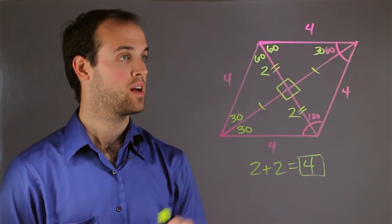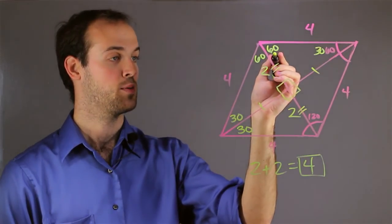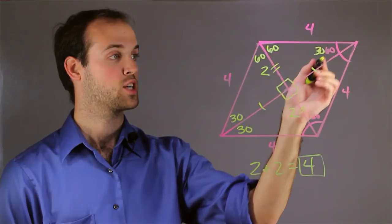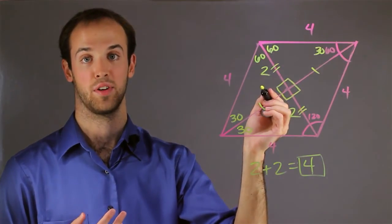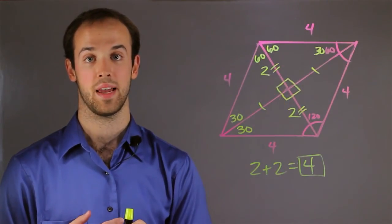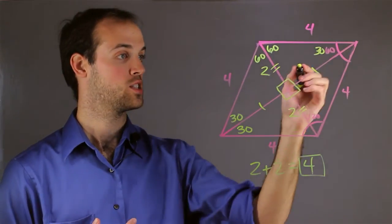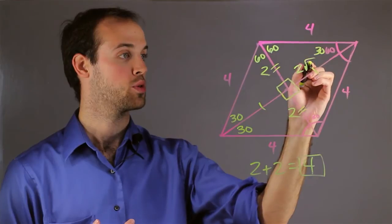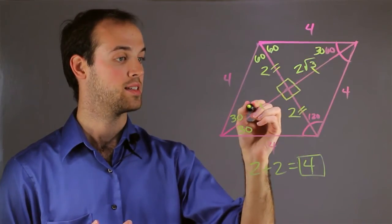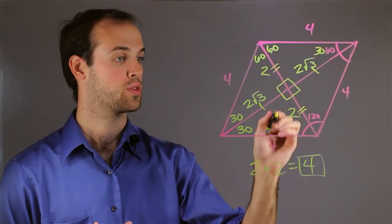Now for the longer one, I'm going to turn to the 60 degree angle. I know that the side across from the 60 degree angle, or the medium side in a 30, 60, 90 triangle, must be the short side times the square root of 3. So I know that this side must be 2 root 3, and the same thing down here for this side because they're congruent, 2 root 3.